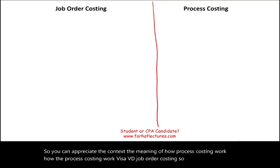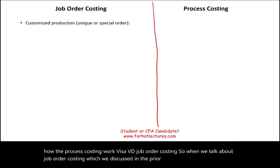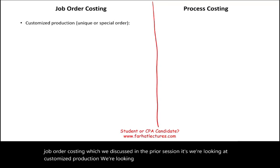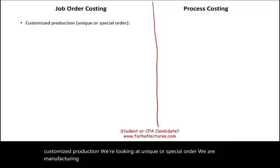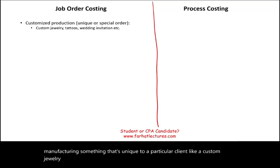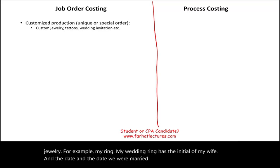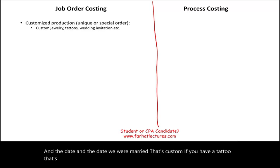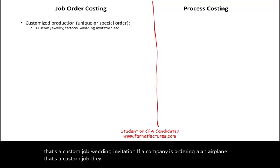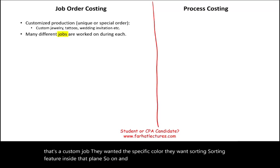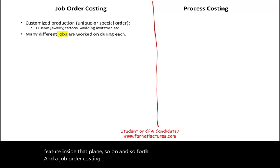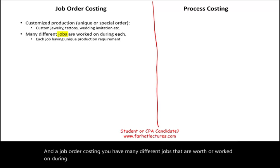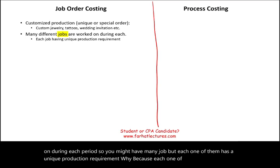When we talk about job order costing, which we discussed in the prior session, we're looking at customized production — unique or special orders. We are manufacturing something unique to a particular client, like custom jewelry. For example, a wedding ring with initials and a marriage date, a tattoo, a wedding invitation, or a company ordering an airplane with a specific color and certain features inside.